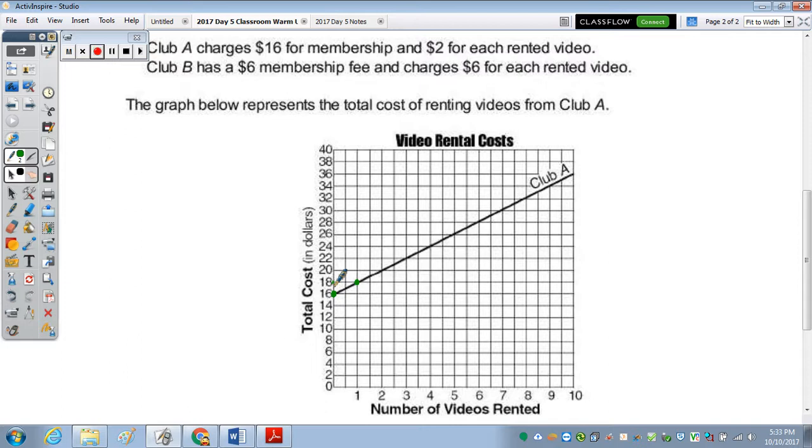Club B is a membership fee of $6 and $6 for each video. A says draw a line to represent the cost of renting videos for B. So let me grab a different color. This $6 membership fee is going to be here. And $6 for each rented video means it's going to go up 6 per one video. So this is change of Y over change of X or rise to run. So it has to go up 6.